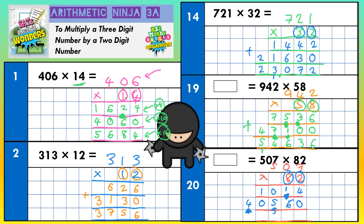Scribble out your carry digits because we don't need to use them again. Just extend our answer lines and then add everything together. 4 plus nothing is 4, 1 plus 6 is 7, nothing and 5 is 5, 1 and nothing is 1, nothing and 4 is 4. Final answer: 41,574. Now we've done questions 1, 2, 14, 19, and 20 — it's time for you to do the rest. Good luck, and don't forget to put those magic zeros in!